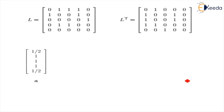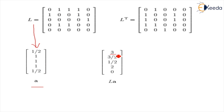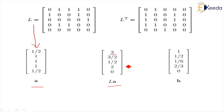Next, we compute L × A (the current authority vector). Multiplying the first row of L by A: 0×1 + 1×1 + 1×1 + 1×1 + 0×(1/2) gives us 3. We continue multiplying all rows to get the full L × A matrix. Again, we normalize by dividing by the largest value, which is 3. This gives us the hub vector H with values such as 1, 1/2, 1/6, 2/3, and 0.